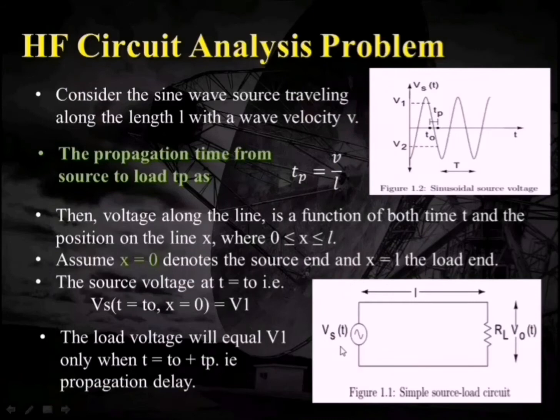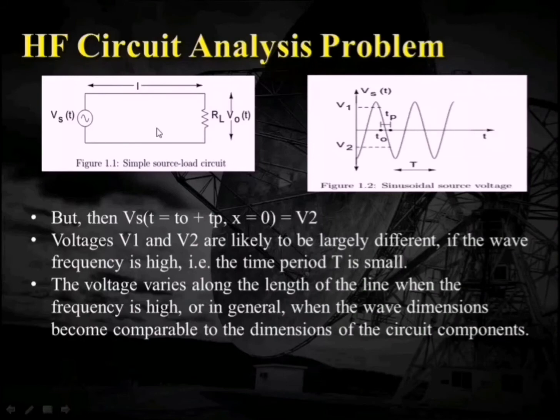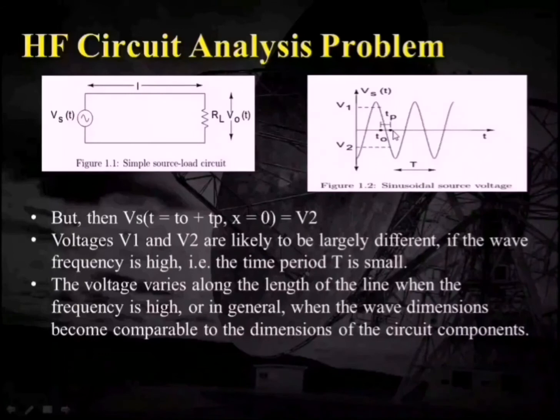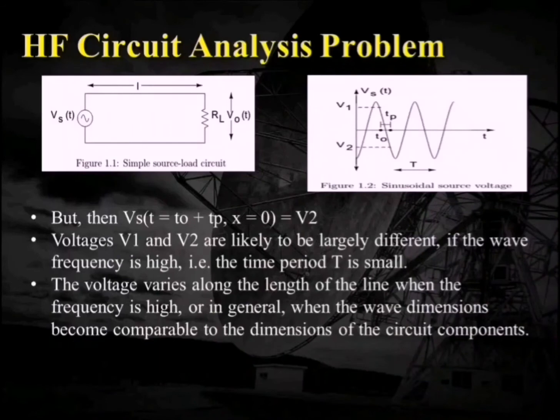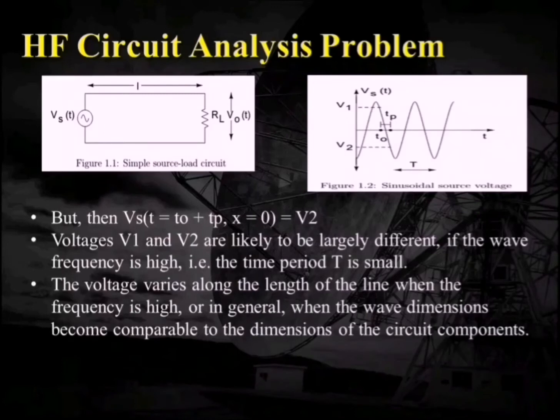But at that instant of time, the input voltage Vs(T) has now changed to a different value V2, because as we have introduced the time Tp, now the time is T0 plus Tp, and this value has changed to V2. It means at the source end the value is now V2, but at the load end the value is V1. Both these voltages V1 and V2 are likely to be different if the frequency is high, and the difference is very high for high frequencies, meaning the wave dimensions now become comparable to the dimensions of the circuit components.